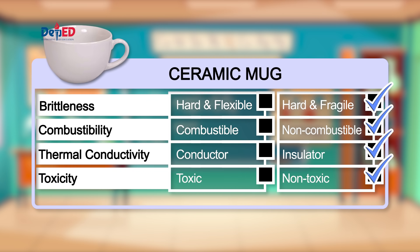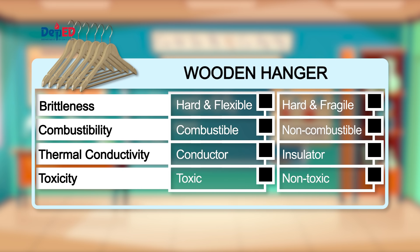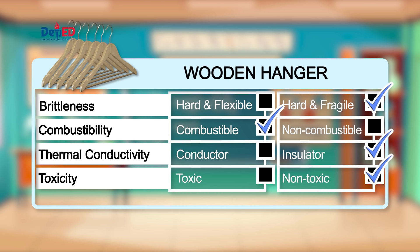Object number two is a wooden hanger. A wooden hanger is made of wood. Is it hard and fragile or hard and flexible? It is hard and fragile — a wooden hanger is breakable. In terms of combustibility, it will burn; therefore, it is combustible. What about thermal conductivity? It does not allow heat to pass through easily; therefore, it is an insulator. How about its toxicity? Wood is non-toxic. In fact, some of our kitchen utensils are made of wood.